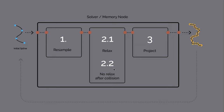And this here is the setup that we are building. We are starting with the initial Spline. Then we are building a solver with three parts inside. The first part will be the resampling of the Spline. The second part will be the relaxing of the points, and there we decide which point we like to relax and which not. We are doing this with a collision geometry. And in the third part we are making a projection, so we are projecting the points onto a surface. After that we get our relaxed new Spline, and this Spline goes back to the start. So we are solving on each frame the new Spline.